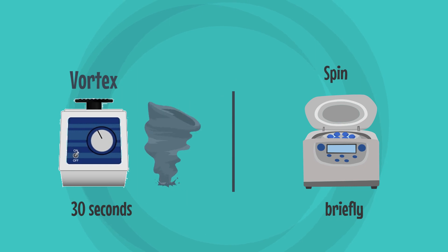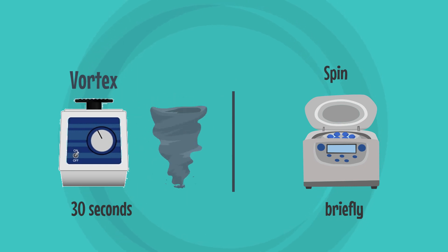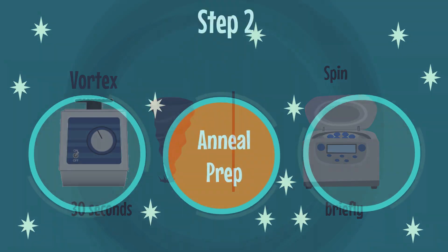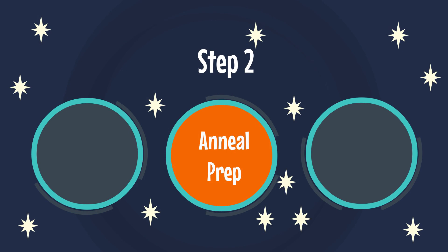Vortex 30 seconds and spin briefly. Step 2: Anneal Prep.